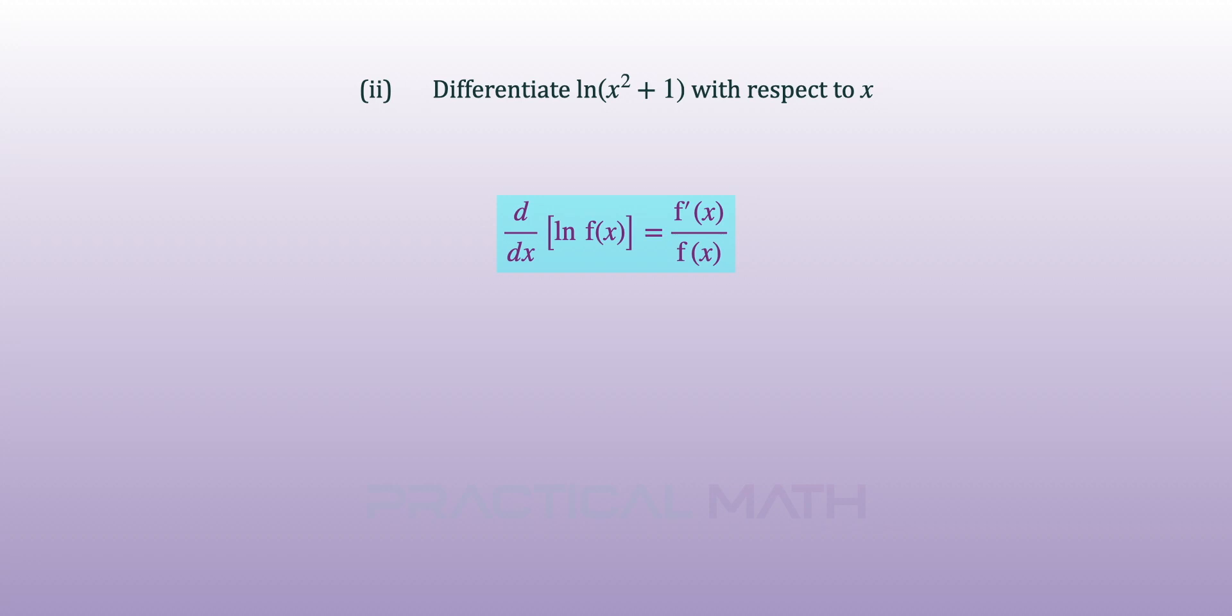Differentiating ln with respect to x will give us f prime of x divided by f of x. We will differentiate ln by first copying the f(x), in this case x squared plus 1, into the denominator.